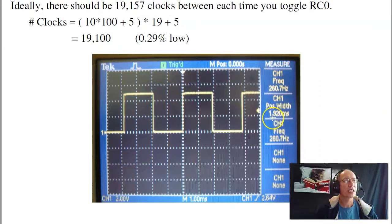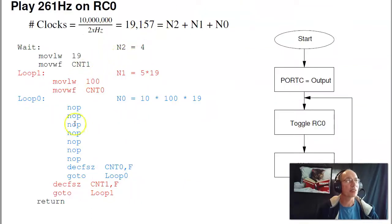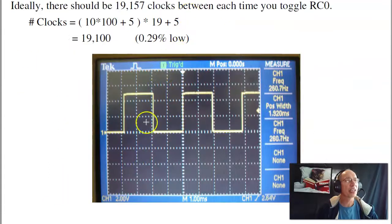This is on for 1.92 milliseconds. The PIC executes one clock every 100 nanoseconds. So this is actually 19,200 clocks. It's supposed to be 19,057. The frequency is supposed to be 261 hertz. It's actually 260.7. This is the beauty of assembler. I can actually count how many instructions, how many clocks it's going to take to go through this code and tweak it to get it just right.